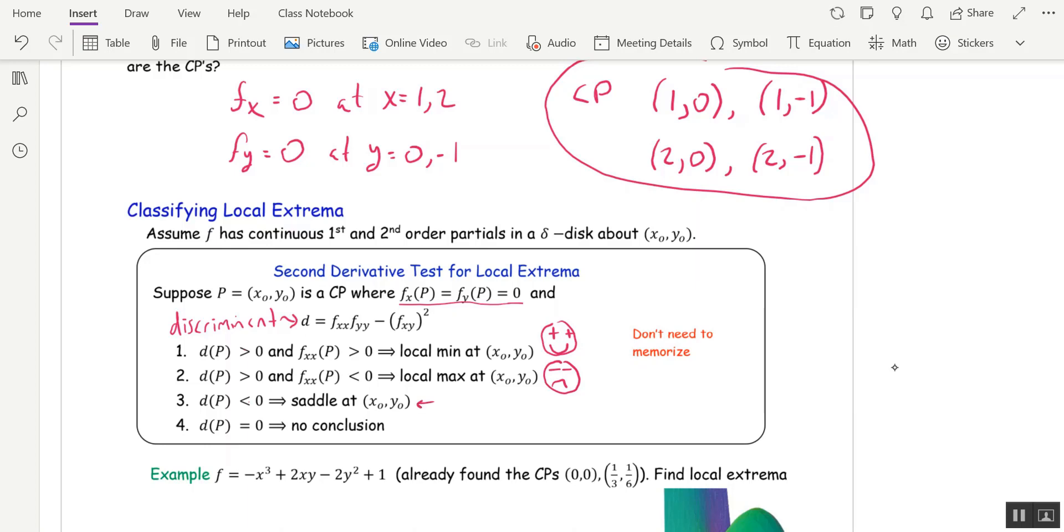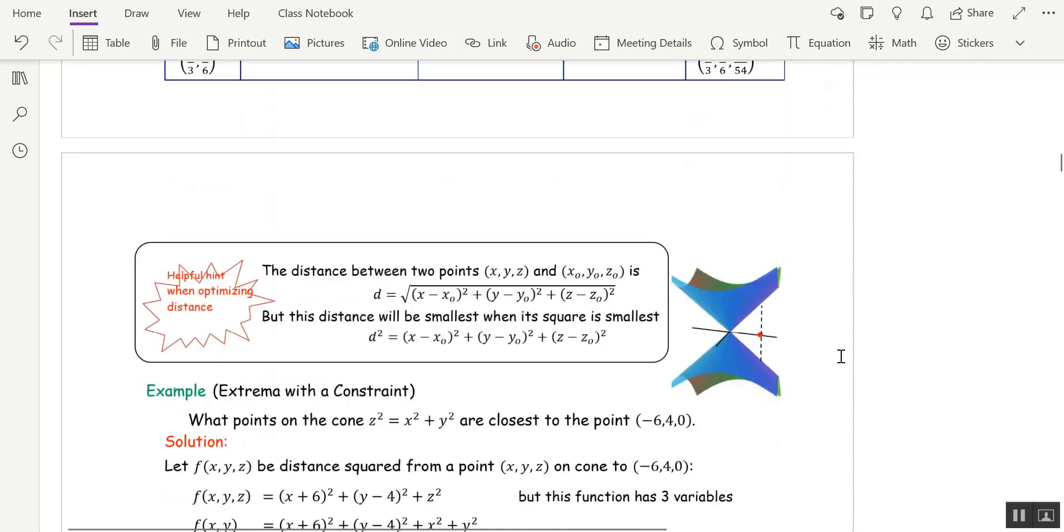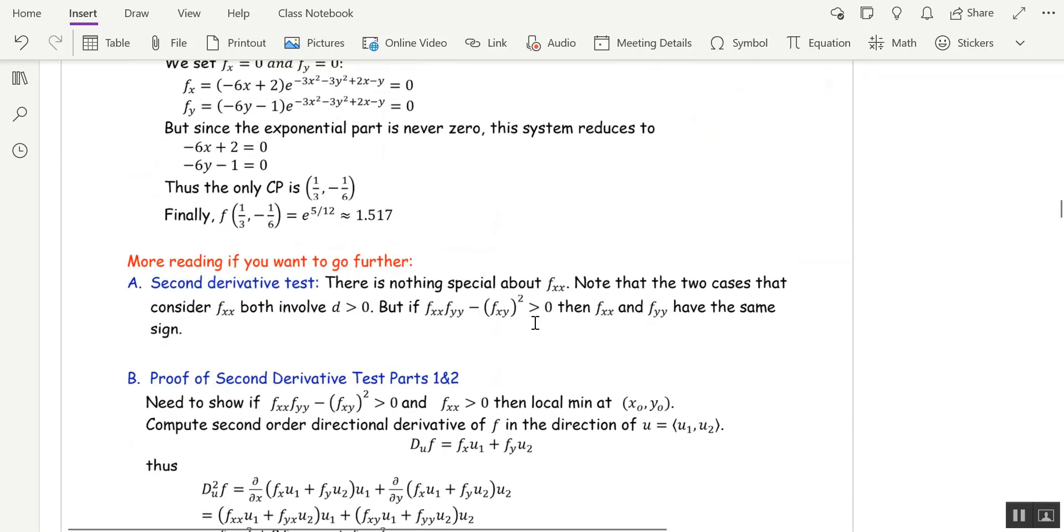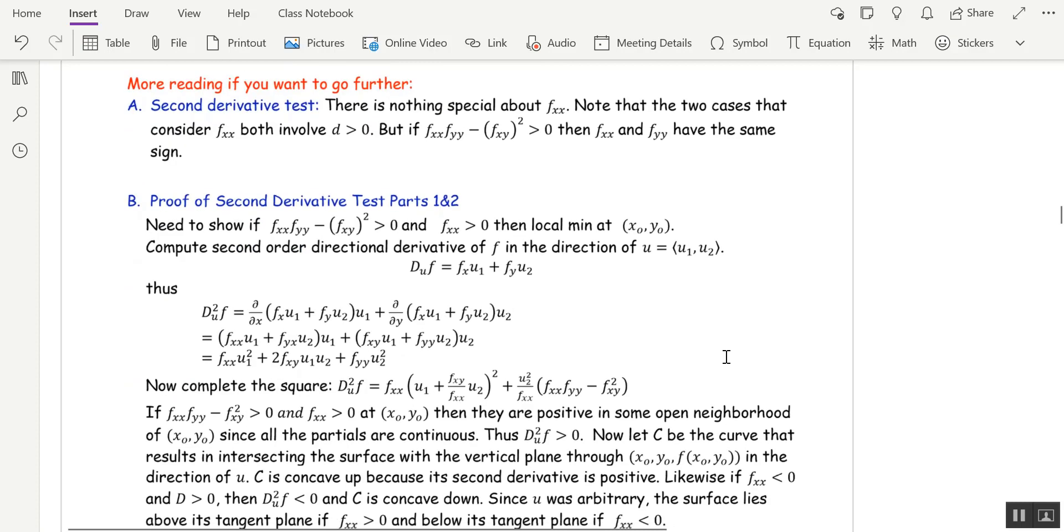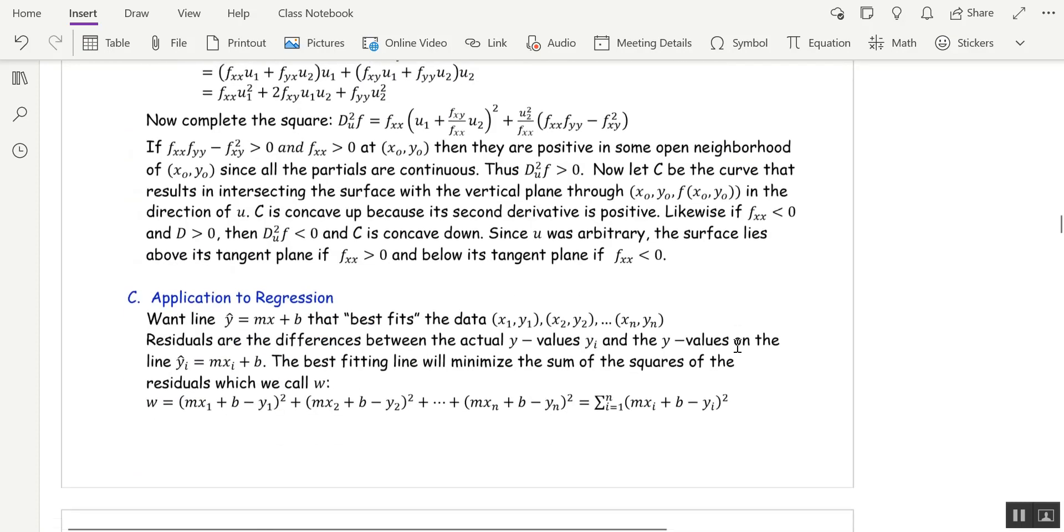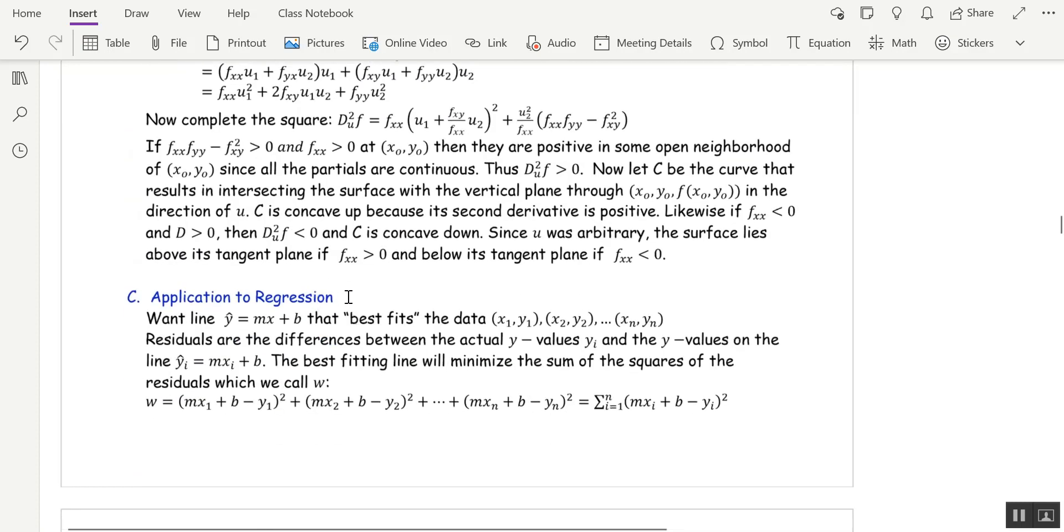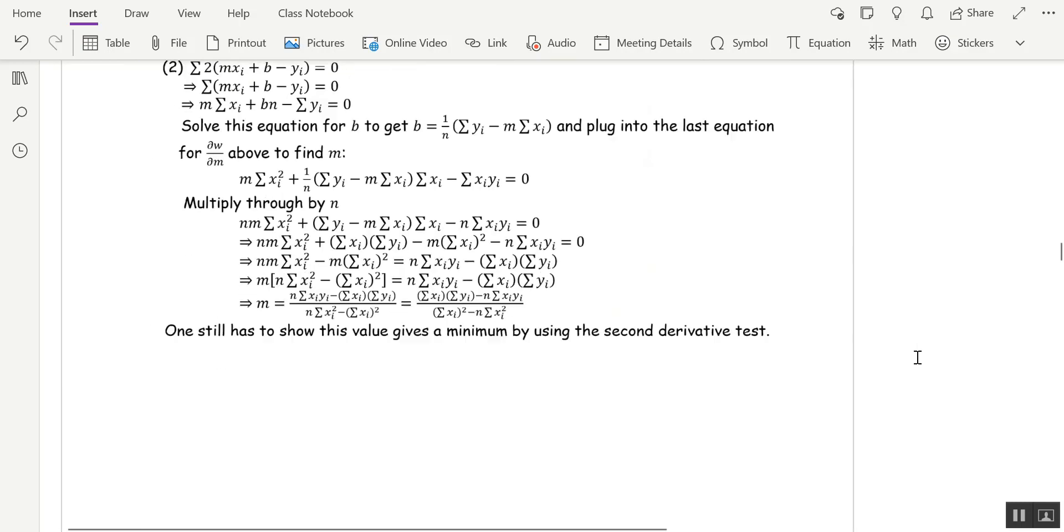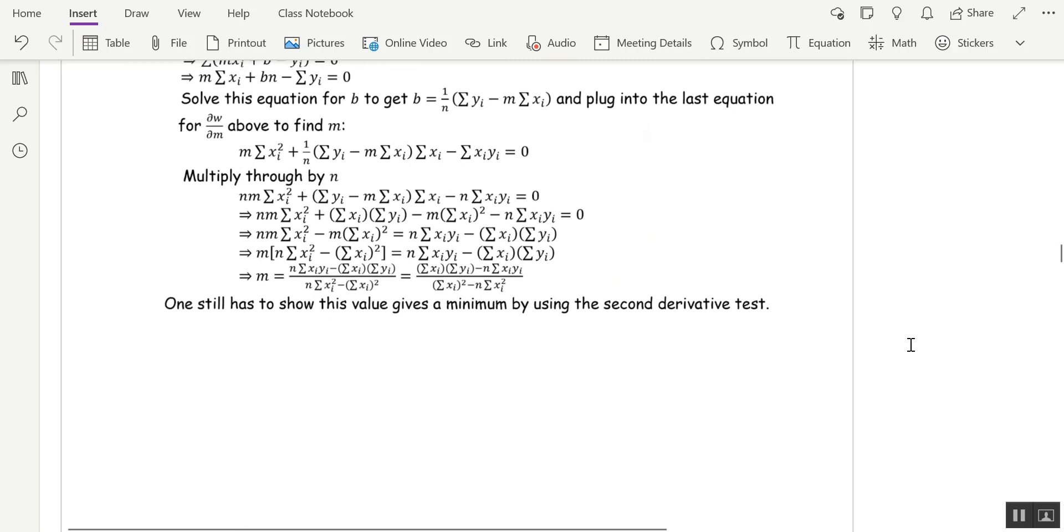If the discriminant is negative, you've got a saddle. And if the discriminant is 0, no conclusion. And by the way, there's nothing special about fxx versus fyy, and I explain that in the end where there's further reading. So let me just jump to that. On your further reading that you don't have to read, but I thought you might be interested, I explain why there's nothing special about fxx. I give a proof of the second derivative test. And then the interesting thing is the application to regression, finding a line of best fit using second derivative test.